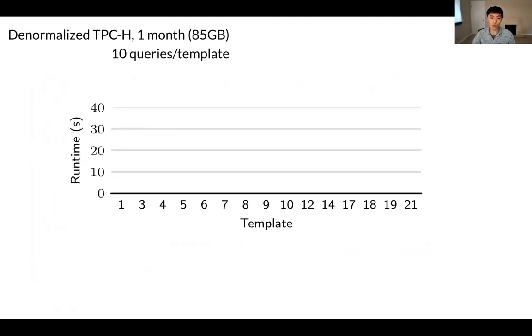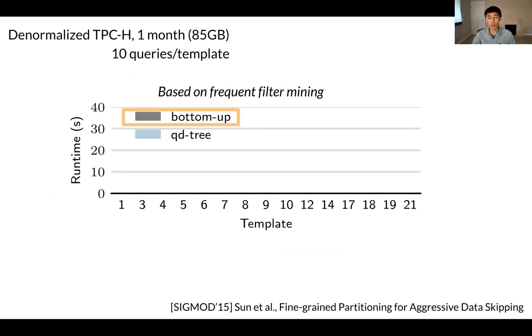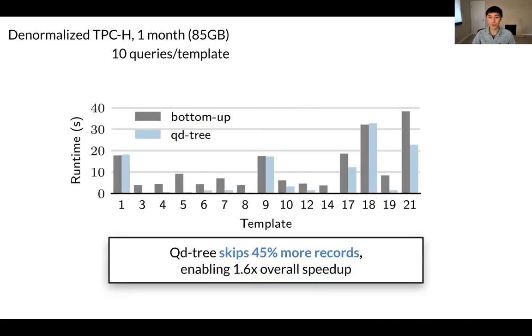Okay, does this idea work? We evaluate on denormalized TPC-H. On the y-axis, we are going to show runtime in seconds, and the x-axis is a query template. We compare to bottom-up, which is a state-of-the-art layout scheme in the literature, and it is based on frequent filter mining. So different from us, they don't consider all filters, they only consider the frequent ones in the query log. Here are the results. We see that QD-tree layout is able to significantly outperform bottom-up, and this is because it skips 45% more records and enables an overall speedup of 1.6 times.